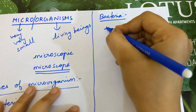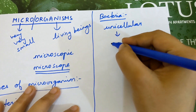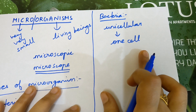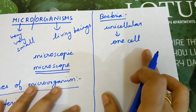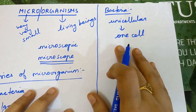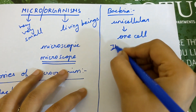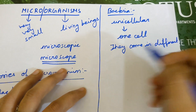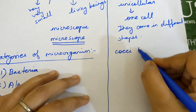Bacteria is a unicellular micro-organism, meaning it is made up of one single cell. A cell is something which is extremely very small, as we have learnt in previous years. The most important property of bacteria is that they come in different shapes.